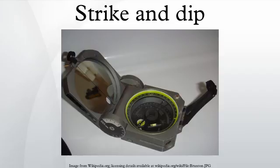One technique is to always take the strike so the dip is 90 degrees to the right of the strike, in which case the redundant letter following the dip angle is omitted. The map symbol is a short line attached at right angles to the strike symbol, pointing in the direction which the planar surface is dipping down. The angle of dip is generally included on a geologic map without the degree sign.